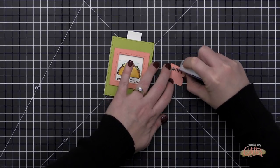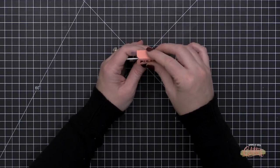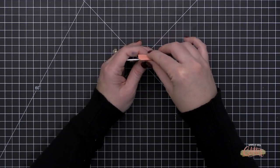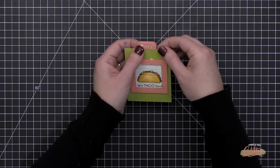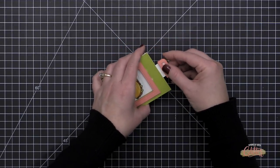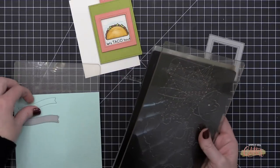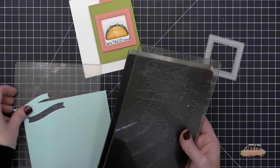This little pull tab is kind of cool because it acts as a stopper and keeps that inner portion from sliding out the bottom. This particular pull tab comes from the Magic Picture Changer add-on. There is also one included with the Magic Picture Changer die set and it has a little arrow on it.